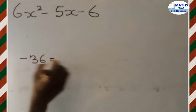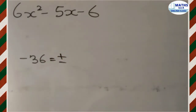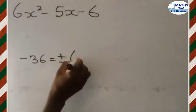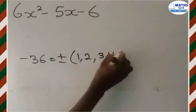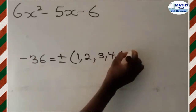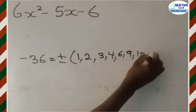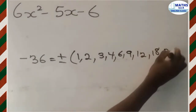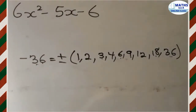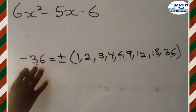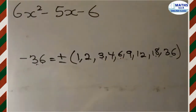Let's find the factors of negative 36. The factors of negative 36 will be plus or minus — meaning one will be positive and one will be negative. The factors are: 1, 2, 3, 4, 6, 9, 12, 18, and 36 itself. These are the numbers that can be multiplied to get negative 36, so just negate one of them and make one positive.